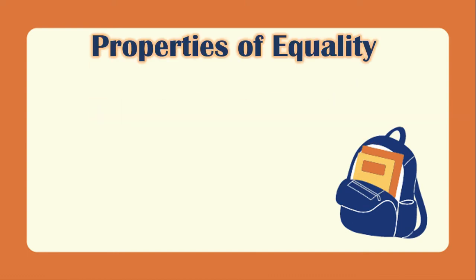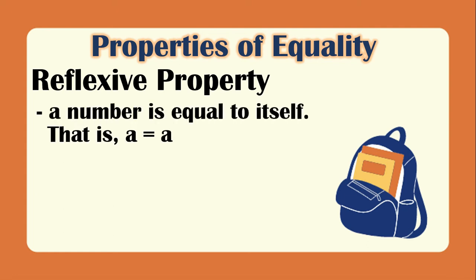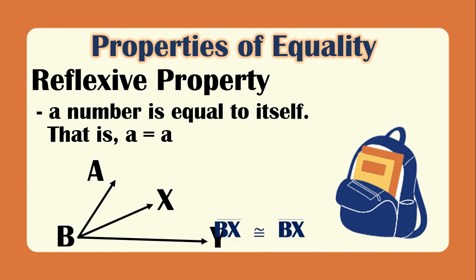Now let's cover the properties of equality. The first is the reflexive property: a number is equal to itself — A equals A. For example, BX is congruent to BX, or two angles share the same side BX.